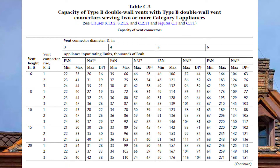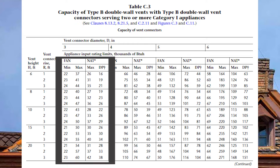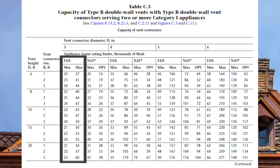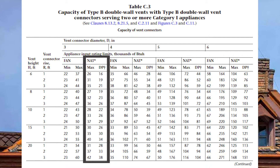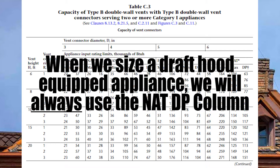Looking back at table C3 in the appliance input rating area, it is laid out exactly the same as tables C1 and C2 from the previous video. I have the fan min/max area for sizing fan-assisted appliances, and then the NAT max and DP area for sizing draft hood equipped appliances. We will never use the max column — only DP, which means depressurized or airtight building.